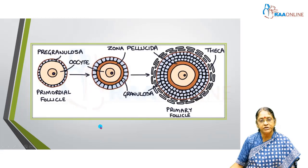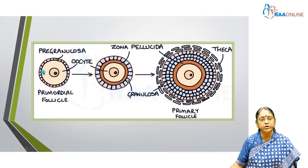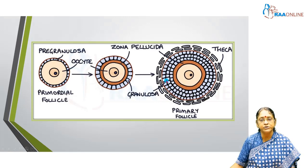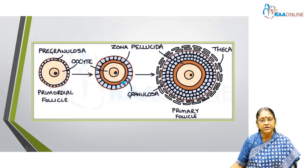Here are some pictures to recap how the zona pellucida appears. Here is the primordial follicle with the oocyte. The cells in the primordial follicle are called the pregranulosa cells; when it becomes the primary follicle, these cells are renamed the granulosa cells. At the primary oocyte stage you find the nucleus, the oocyte, and this brown layer which is the zona pellucida — it's a clear, extracellular layer with no cells. Here are the granulosa cells, which will later become the corona radiata and related structures.